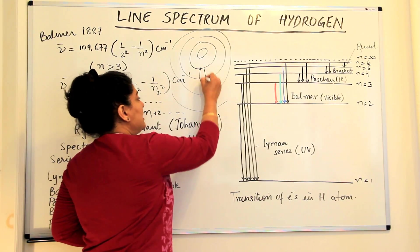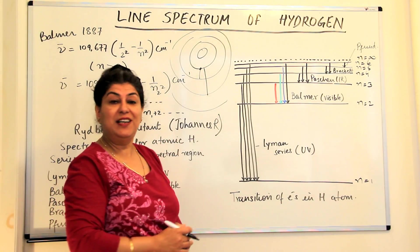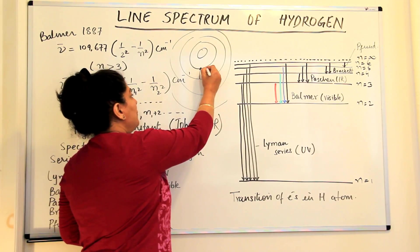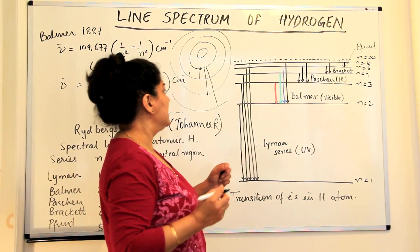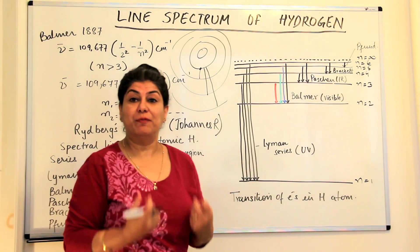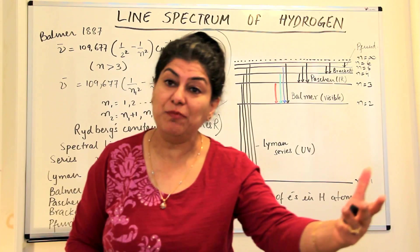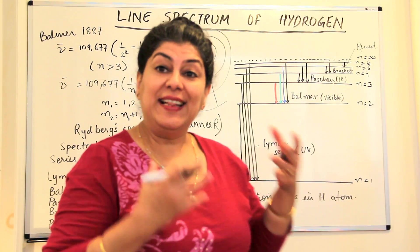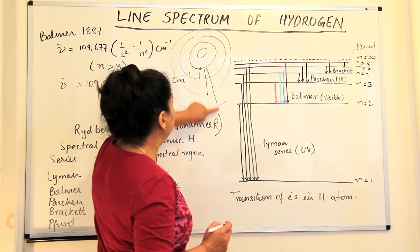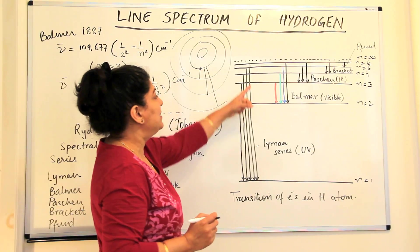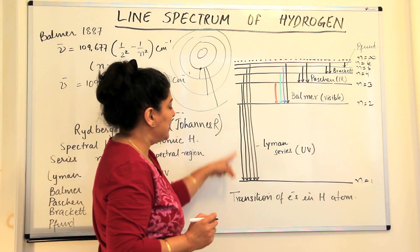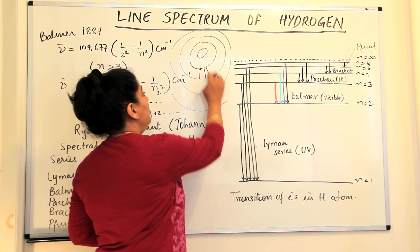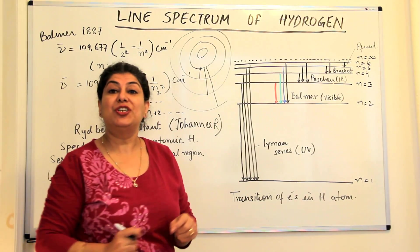Whatever energy it absorbed, it emits the same to give you the spectrum. When it releases so much energy, you get a different line. When it releases lesser energy, you get a different line because the electron moves back to the original level.